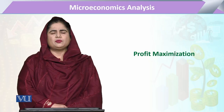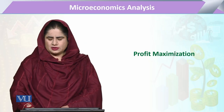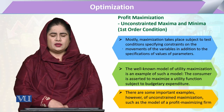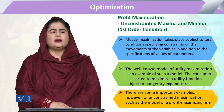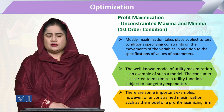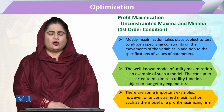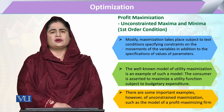In the chapter of optimization, today's topic is unconstrained maxima and minima of the profit function.